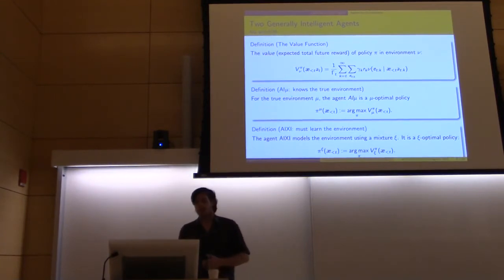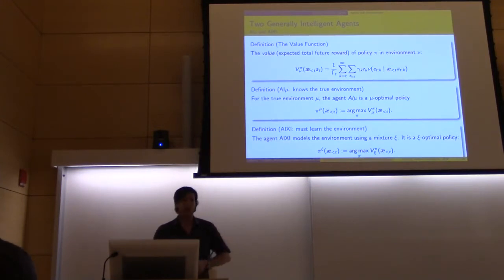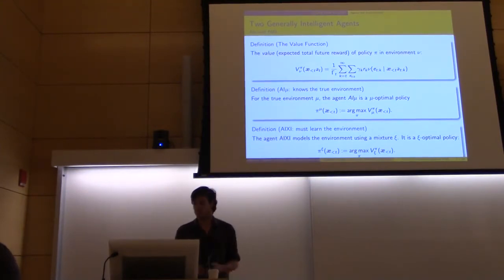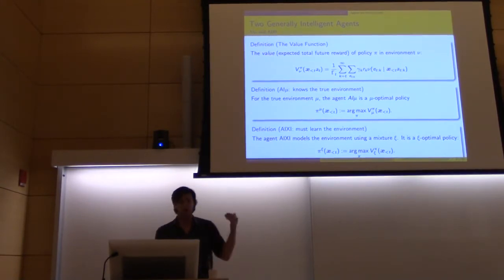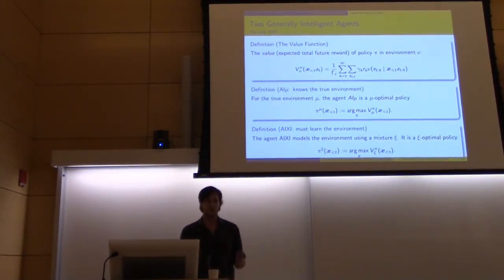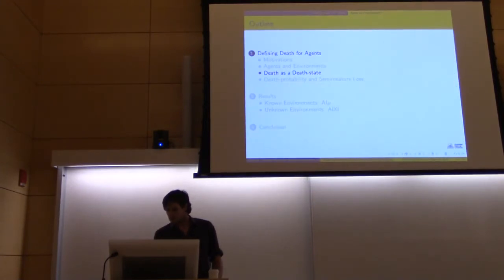The agents that we talk about in this paper are two: AIMU and ICSI. These are both value-maximizing reinforcement learning agents. At every time step, the agent gets reward, and the goal is maximize expected total future reward. The first is AIMU. AIMU is the agent that knows the true environment totally. The learning problem is finished for AIMU. So, AIMU's goal is just to plan optimally in order to maximize rewards. AIMU is the mu-optimal policy, a policy that would maximize value when it knows the true environment.